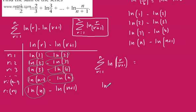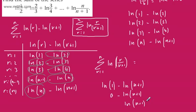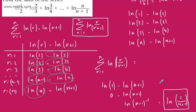That leaves us with the natural log of 1, which is 0, minus the natural log of N plus 1. So we could write this as minus the natural log of N plus 1, or using log laws, as the natural log of N plus 1 to the minus 1, which is the natural log of 1 over N plus 1. And that is the sum of the series from R equals 1 to N of the natural log of R over R plus 1, which equals the natural log of 1 over N plus 1, or equivalently negative ln of N plus 1.